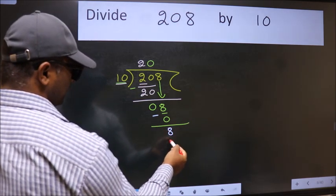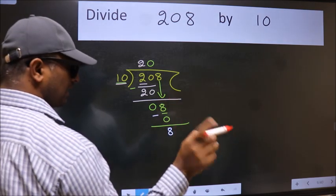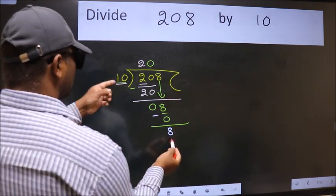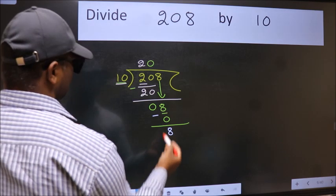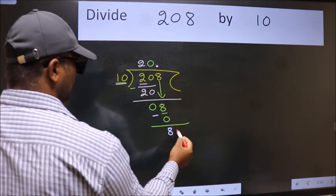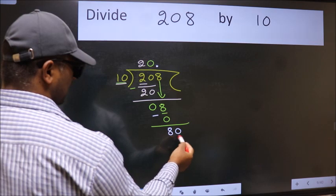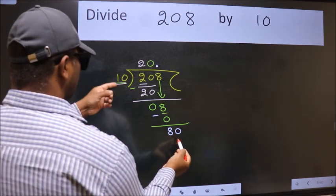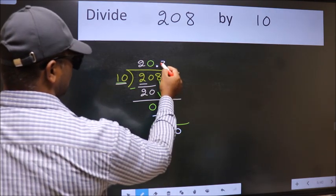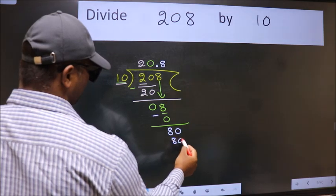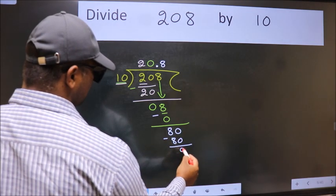Over here we did not bring any number down, and 8 is smaller than 10. So now we can put a dot and take 0. So 80. When do we get 80 in the 10 table? 10 times 8 is 80. Now we subtract and get zero.